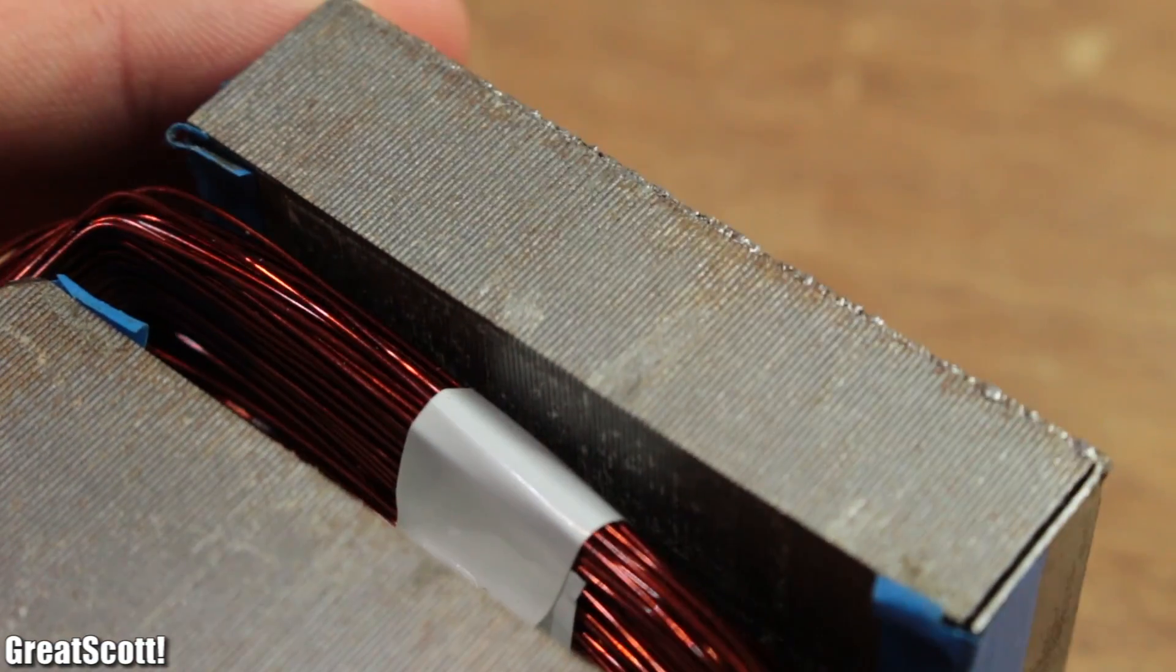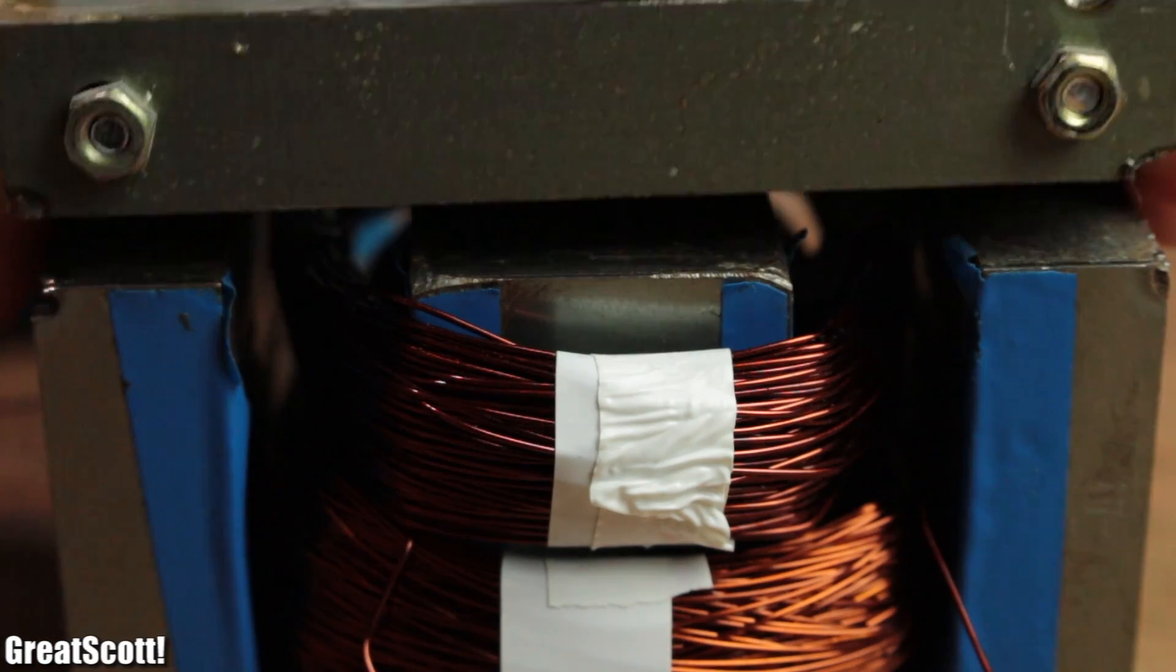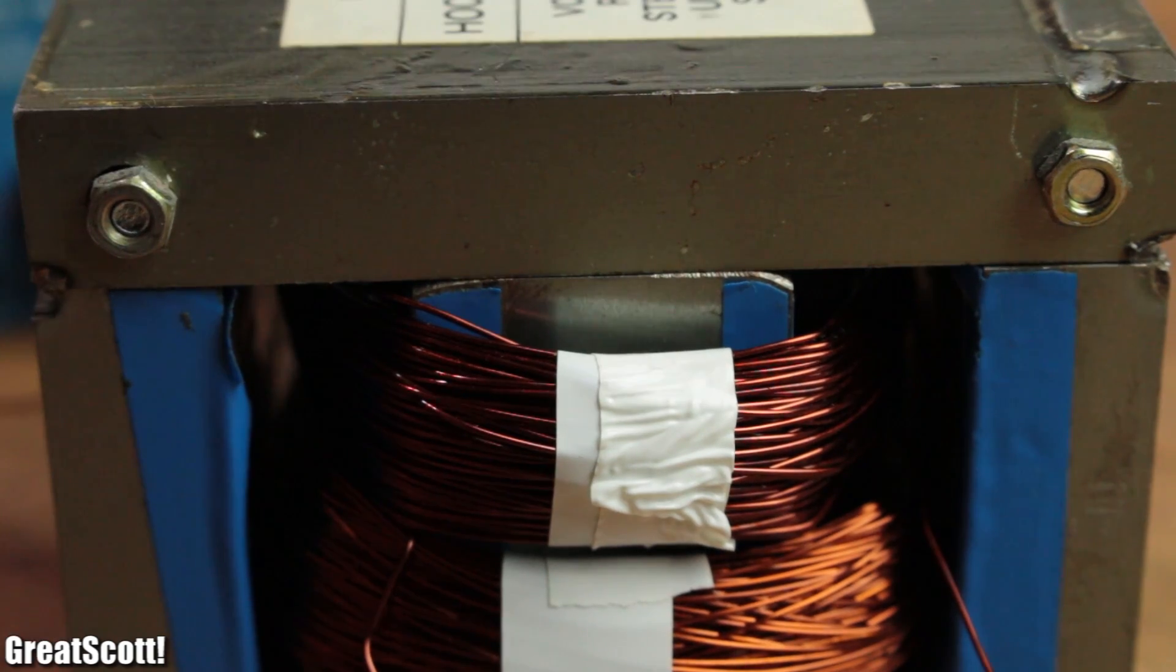But here the magnetic forces on the iron let the slices vibrate. This is due to the air gaps between them and the rather big air gaps between the E and I section of my core.